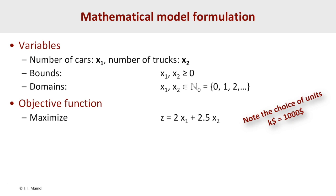Note that we did not use two thousand or two thousand five hundred dollars directly — instead we use the unit kilo-dollars, so everything is written in units of thousand dollars. Two times x1 means two thousand dollars for each car, and so on. The reason is that whenever you do numerical calculations, it's advantageous to use numbers in the same order of magnitude — it's numerically more stable and minimizes rounding and truncation errors. That's our take on scaling.